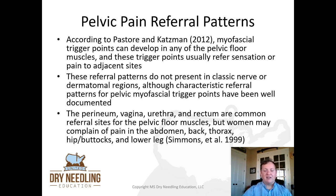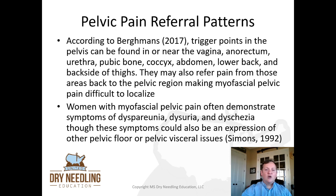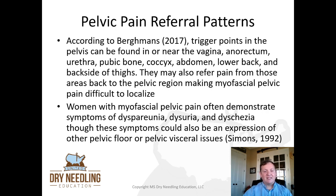Women may also complain of pain in the abdomen, the back, the thorax, the hip, the buttocks, and also in the lower leg. According to Bergman's in 2017, trigger points in the pelvis can be found in or near the vagina, the anorectum, the urethra, the pubic bone, the coccyx, the abdomen, the lower back, and the backside of the thighs. They may also refer pain from those areas back to the pelvic region, making myofascial pelvic pain difficult to localize.